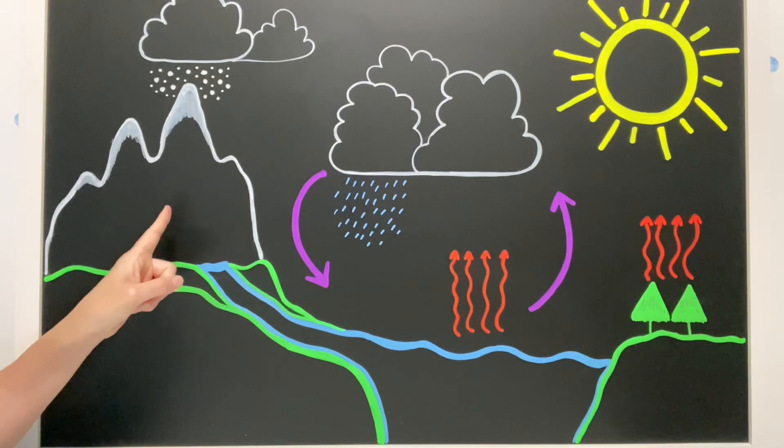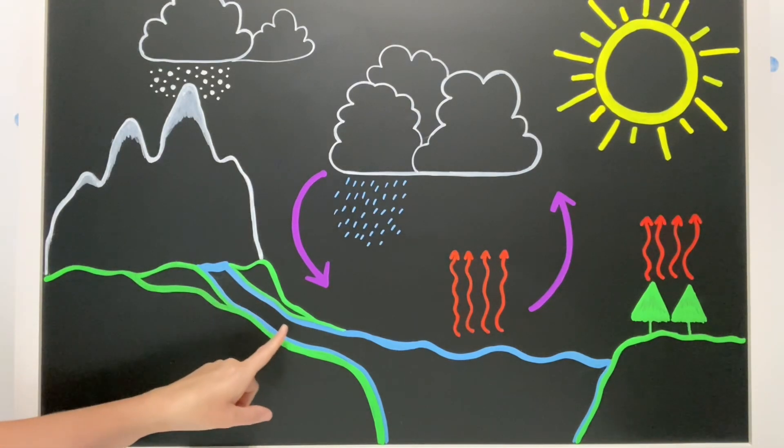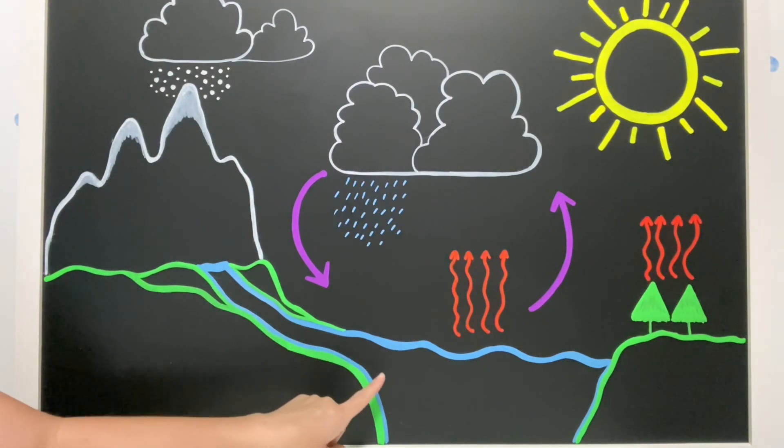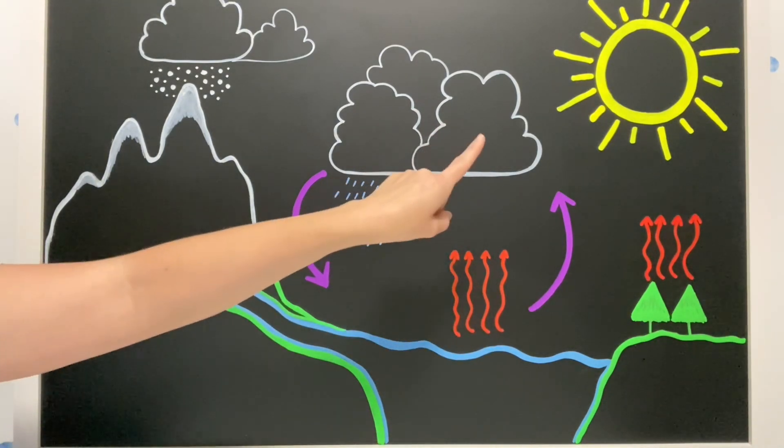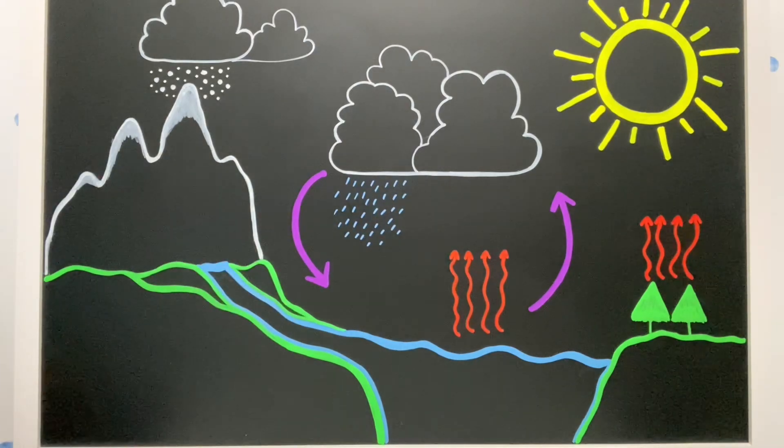I've got a mountain. I've got a lake and a river and an ocean. I've got trees. I've got clouds. I've got the sun. So much going on.